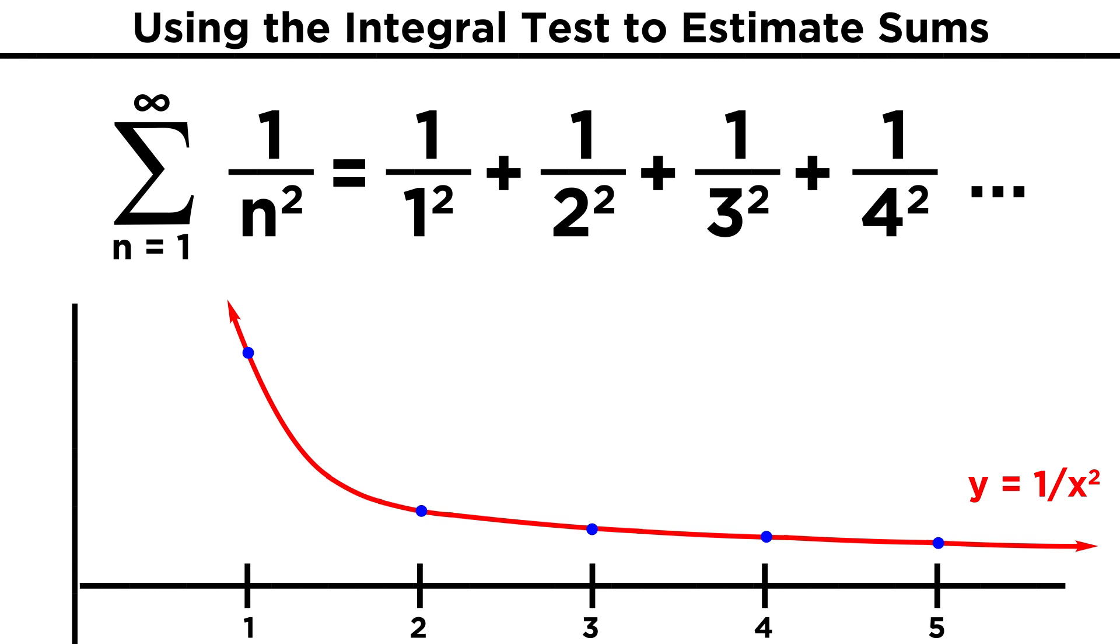If we also show the function y equals one over x squared, essentially connecting the dots, we recognize that this is the precise example we looked at when we learned about improper integrals, and we know the area under the curve over this infinite interval is actually finite. Therefore, we shouldn't be surprised to learn that this similar looking series is convergent, especially since the sequence one over n squared does go to zero as n approaches infinity.